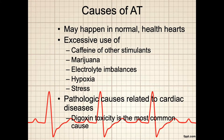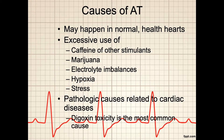Atrial tachycardia can occur in patients with normal healthy hearts. In those cases, the condition is commonly related to excessive use of caffeine or other stimulants, marijuana use, electrolyte imbalances, hypoxia, and physical or psychological stress. However, this arrhythmia is usually associated with primary or secondary cardiac problems. Cardiac conditions that can cause atrial tachycardia include myocardial infarction, cardiomyopathy, congenital anomalies, Wolf-Parkinson-White syndrome, and valvular heart disease. The rhythm may be a component of sick sinus syndrome. Other problems that can result in atrial tachycardia include cor pulmonale, hyperthyroidism, systemic hypertension, and digoxin toxicity.